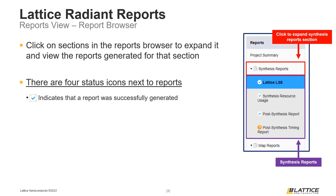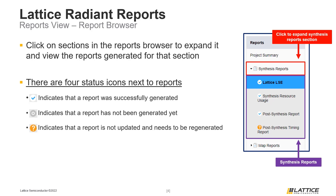The second status icon is a gray circle, which indicates that a report has not been generated before. The third status icon is an orange question mark, which indicates that a report has been generated before for a project but is out of date and needs to be regenerated.